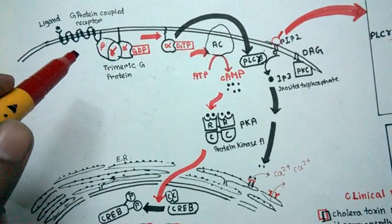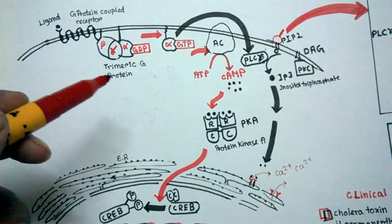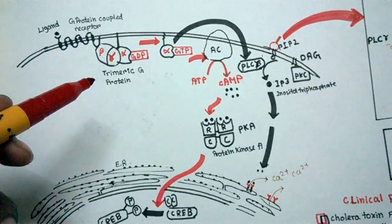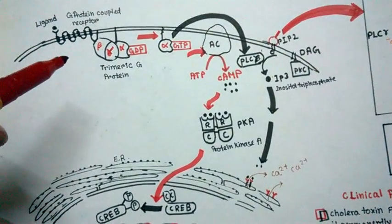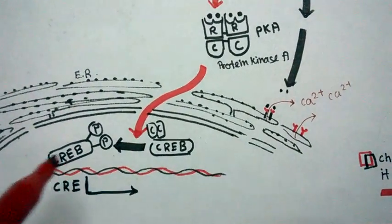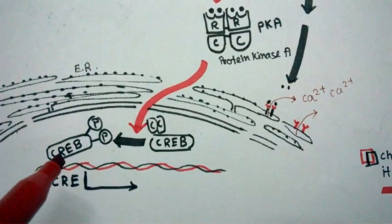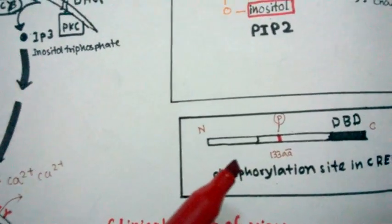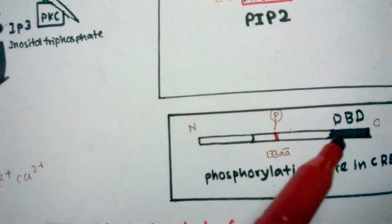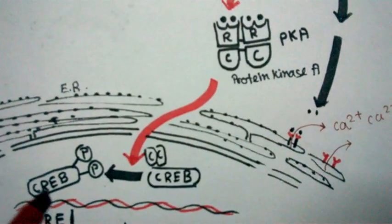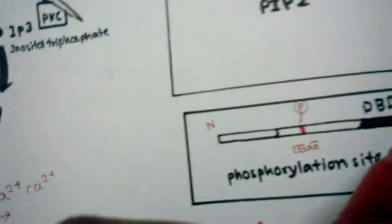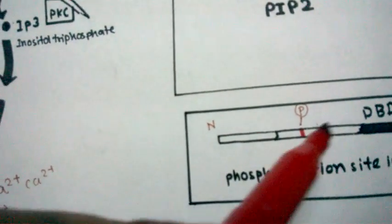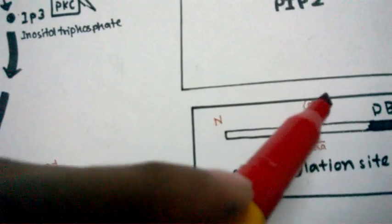One good example of this G protein-coupled receptor mediated signal transduction is chemokine signaling. All the chemokine receptors are actually G protein-coupled receptors. The CREB structure has a DNA binding domain, specifically a C-terminal DNA binding domain. It also has a site where phosphorylation occurs.